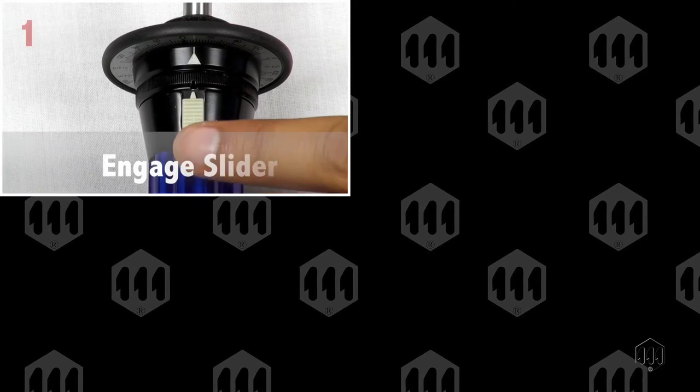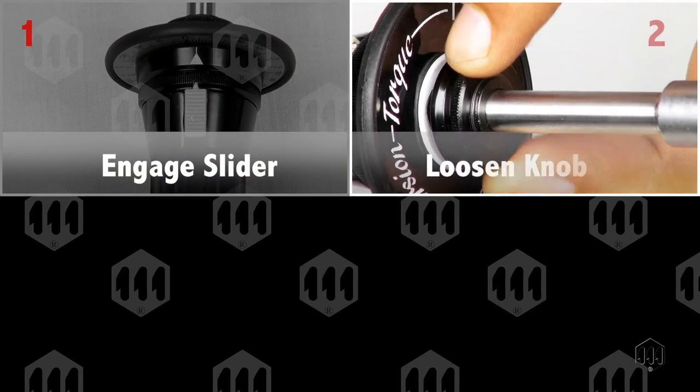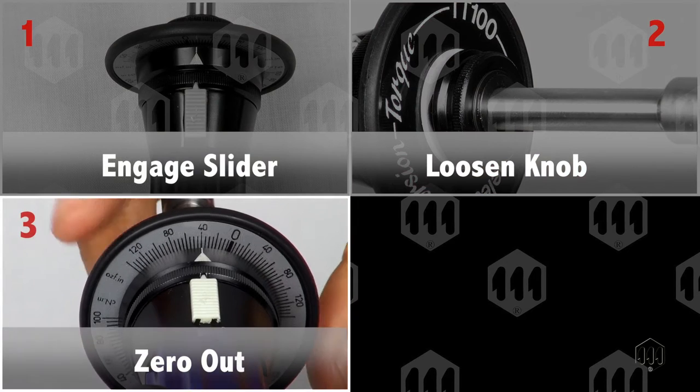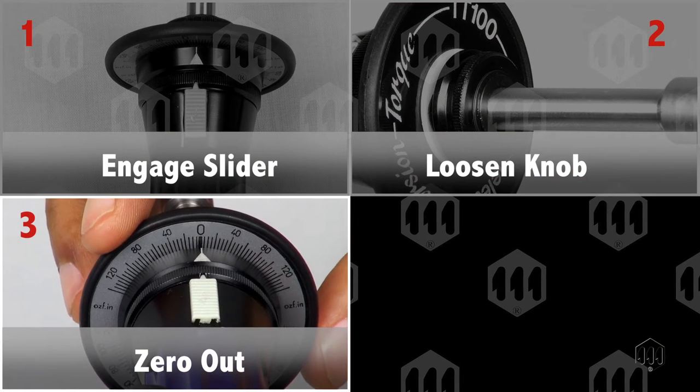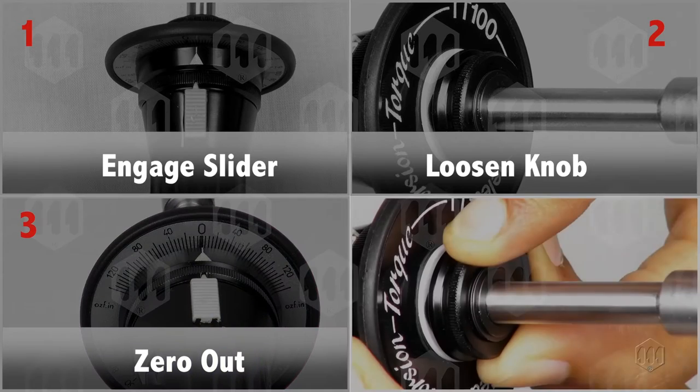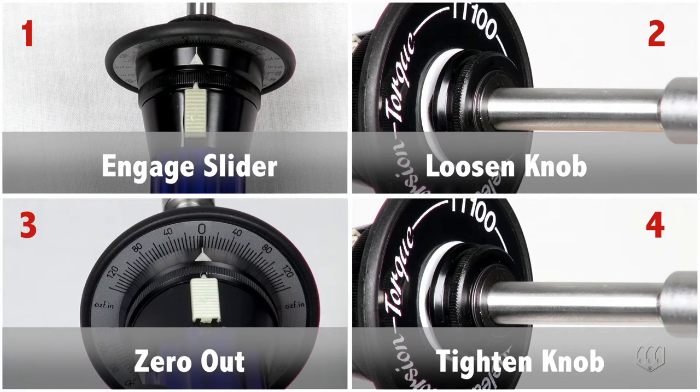Track mode is activated by engaging the white slider. Loosen the outer knob and zero out the scale by making sure the mark is aligned with the zero. Re-tighten the outer knob. The dial screwdriver is now ready to be used in track mode.